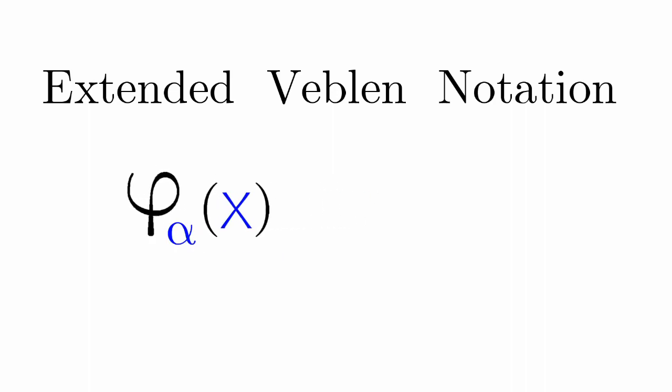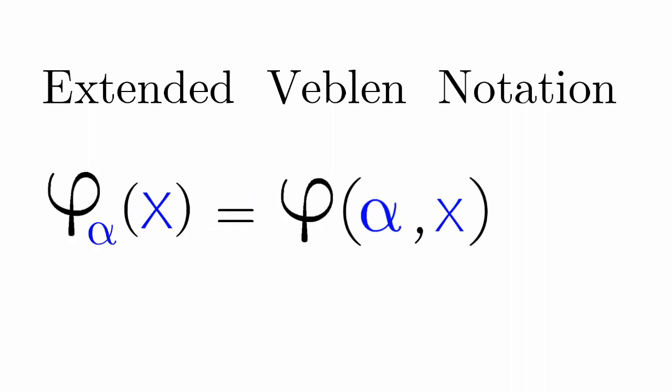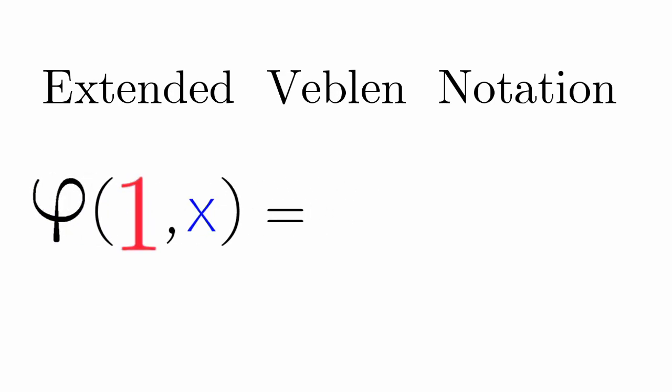Phi Alpha of x can also be written like this. Phi 1 of x, that's equal to Epsilon sub x.